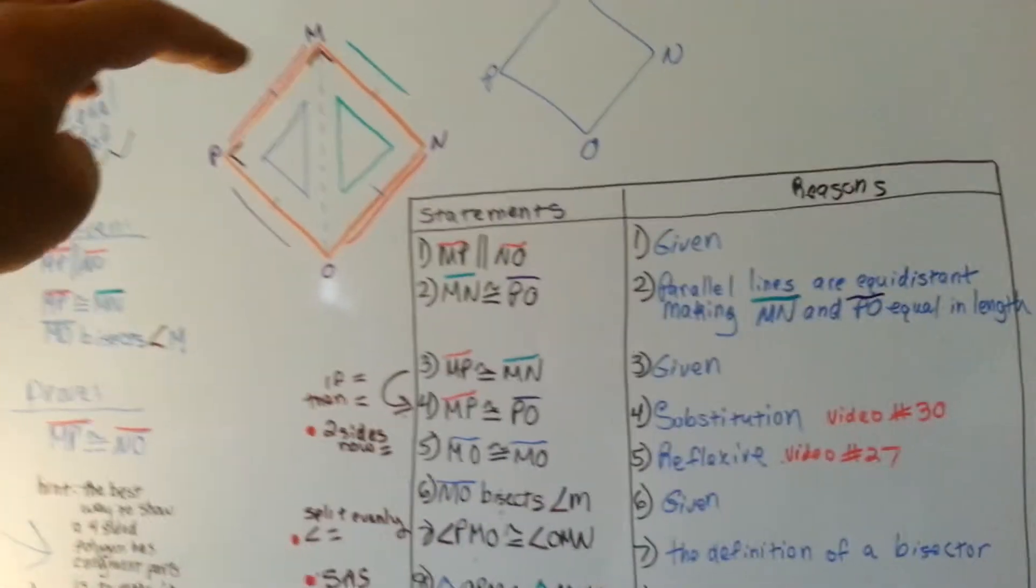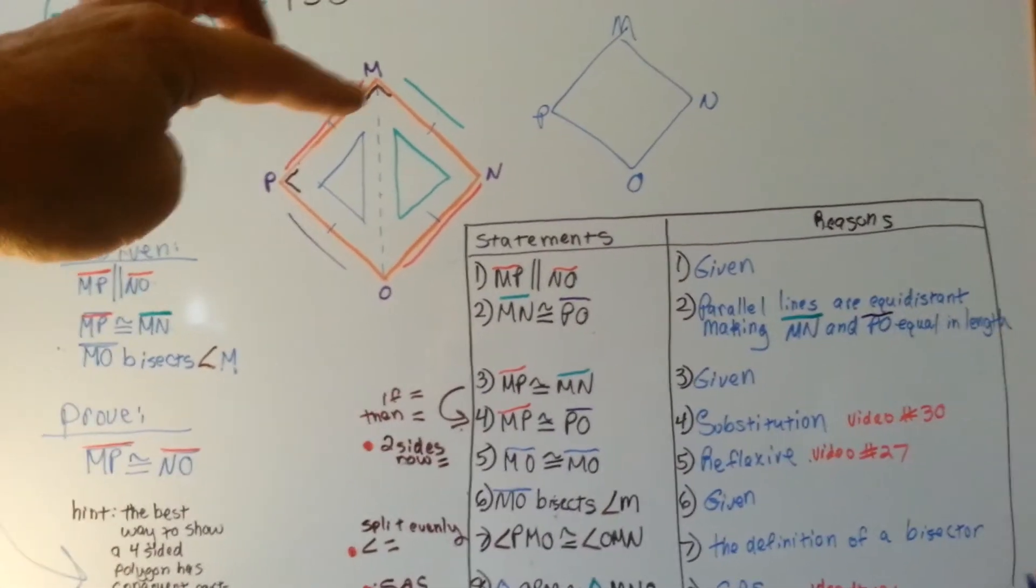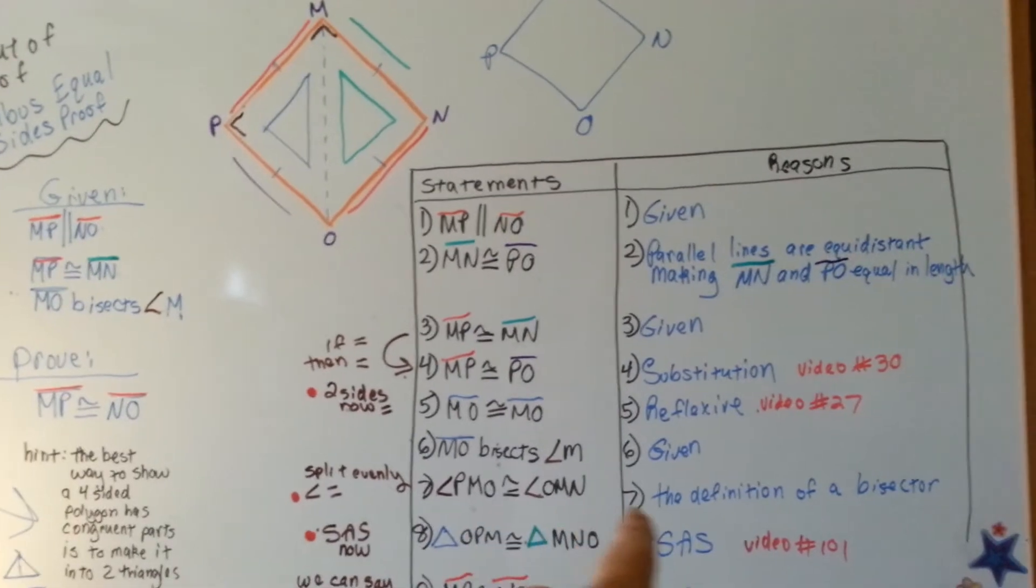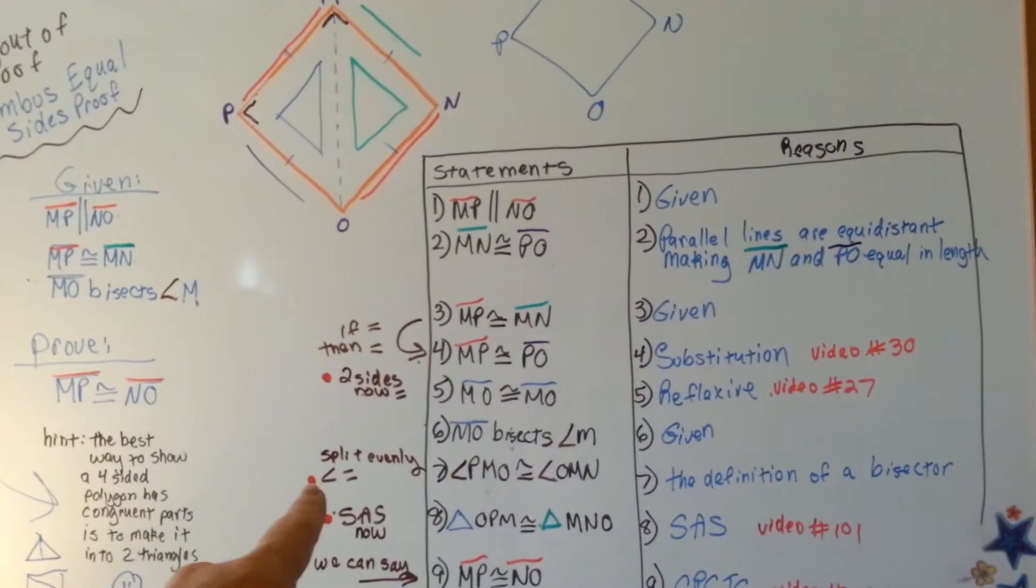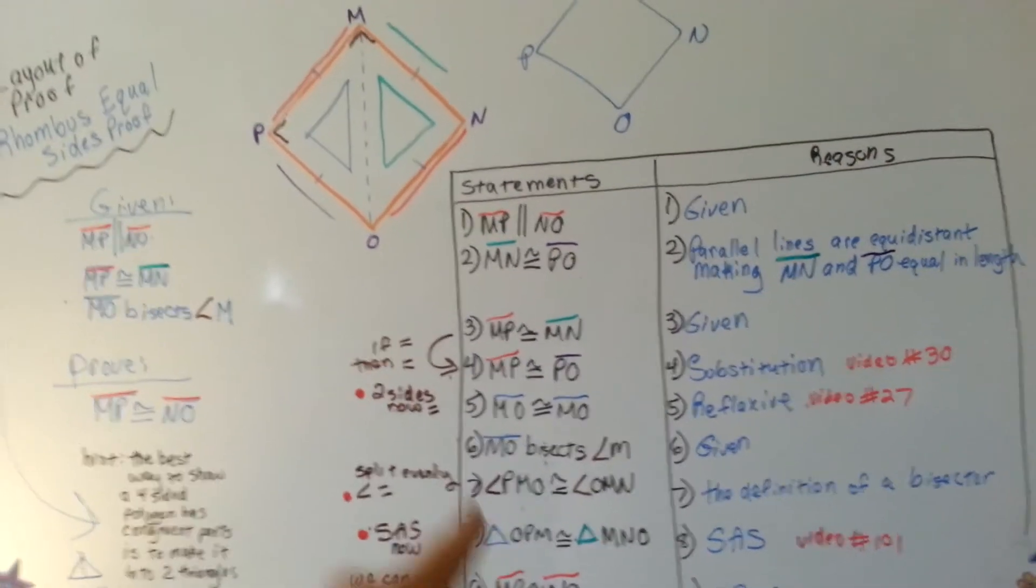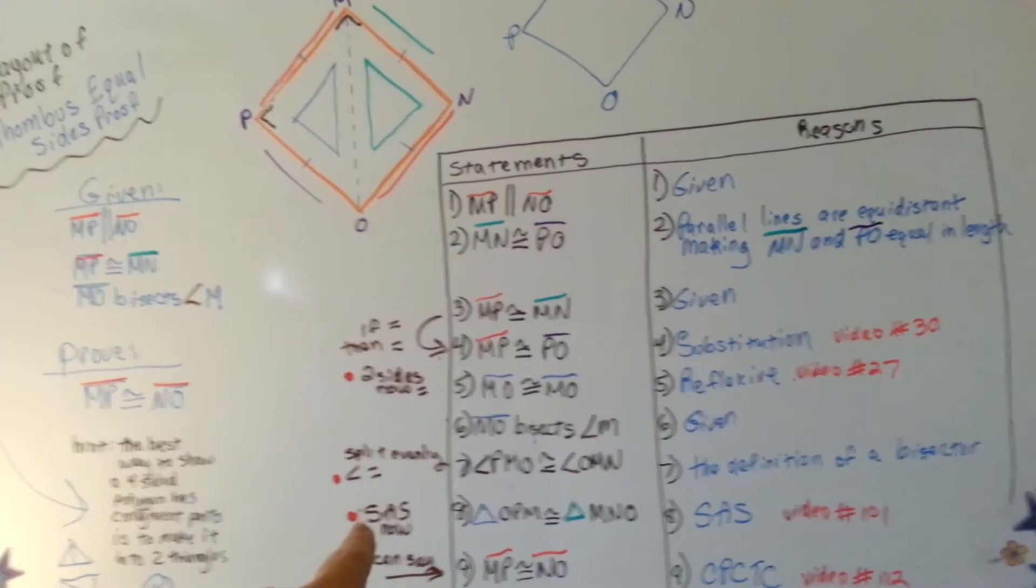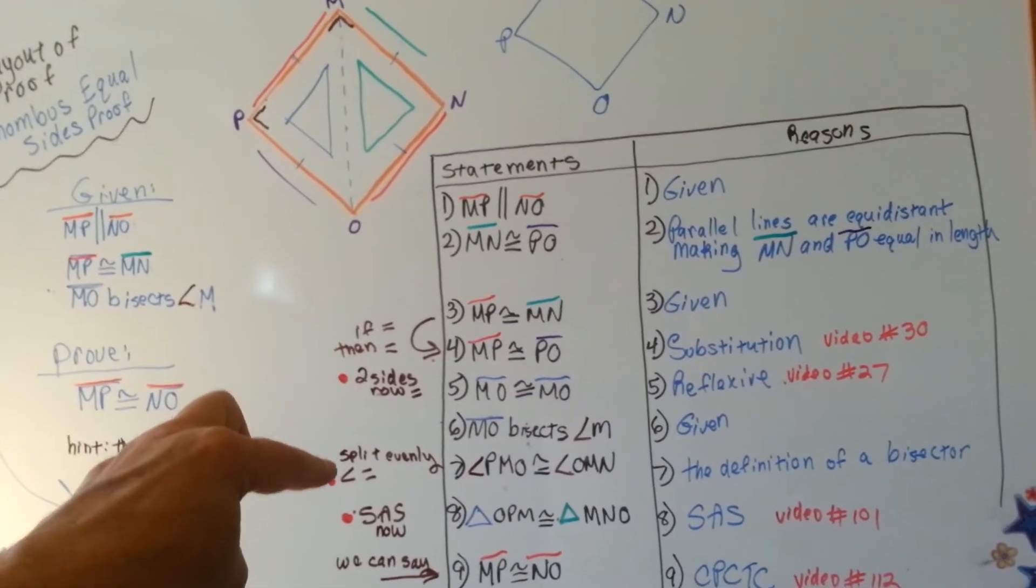So now we're saying that this brown angle and this angle are congruent. PMO and OMN are congruent and that's the definition of a bisector. So now we can say that this blue triangle is congruent with the green triangle because of side, angle, side. We've got two sides and an angle that are congruent.